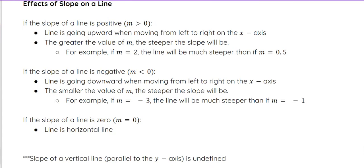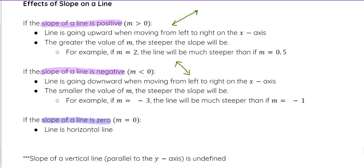Looking at the effects of slope on a line, there are really three cases for linear functions. If the slope of the line is positive — meaning bigger than zero — it's going to visually be going up from left to right. If the slope is negative — less than zero — it will be going down from left to right. And the third case is if the slope is zero, that is going to be a horizontal line, with a slope of zero.